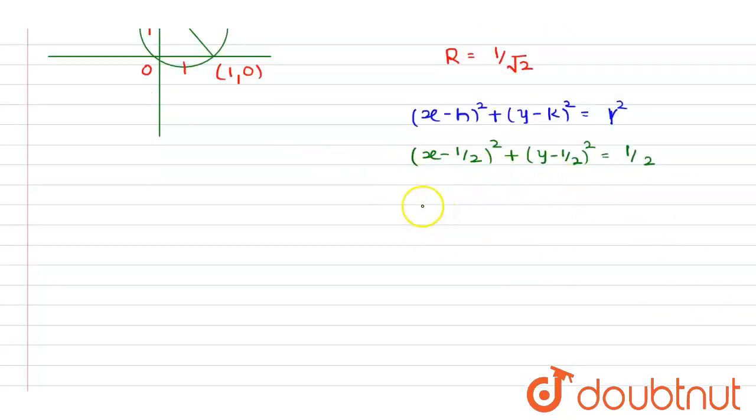We need to expand this so as to get our final answer. Expand this bracket: x² + 1/4 - x + y² + 1/4 - y = 1/2. This 1/4 and this 1/4 will form 1/2, and this 1/2 will be cancelled with this 1/2 on the right hand side. Therefore we will be left with x² + y² - x - y = 0.